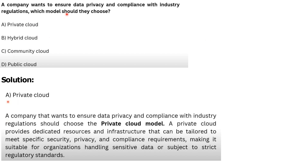Next question: A company wants to ensure data privacy and compliance with industry regulations. Which cloud model should they choose? Options: Private cloud, Hybrid cloud, Community cloud, Public cloud. The correct answer is Private cloud. You can read the explanation.